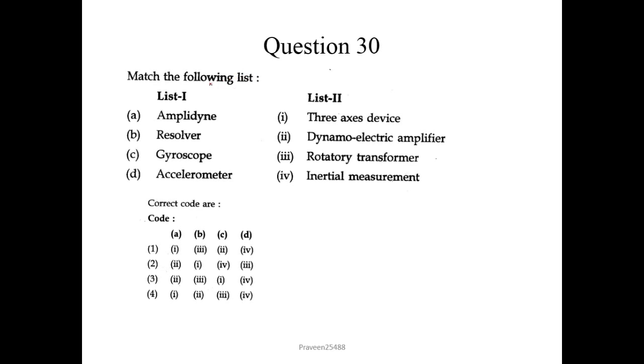Here is question number 30. Match the following list. So here Amplidyne we matched with Dynamo Electric Amplifier. Resolver is a Rotatory Transformer. Here gyroscope is 3-axis device. And accelerometer is used for Inertial measurement. So correct sequence would be 2, 3, 1, 4. Third one would be the correct answer for this question number 30.